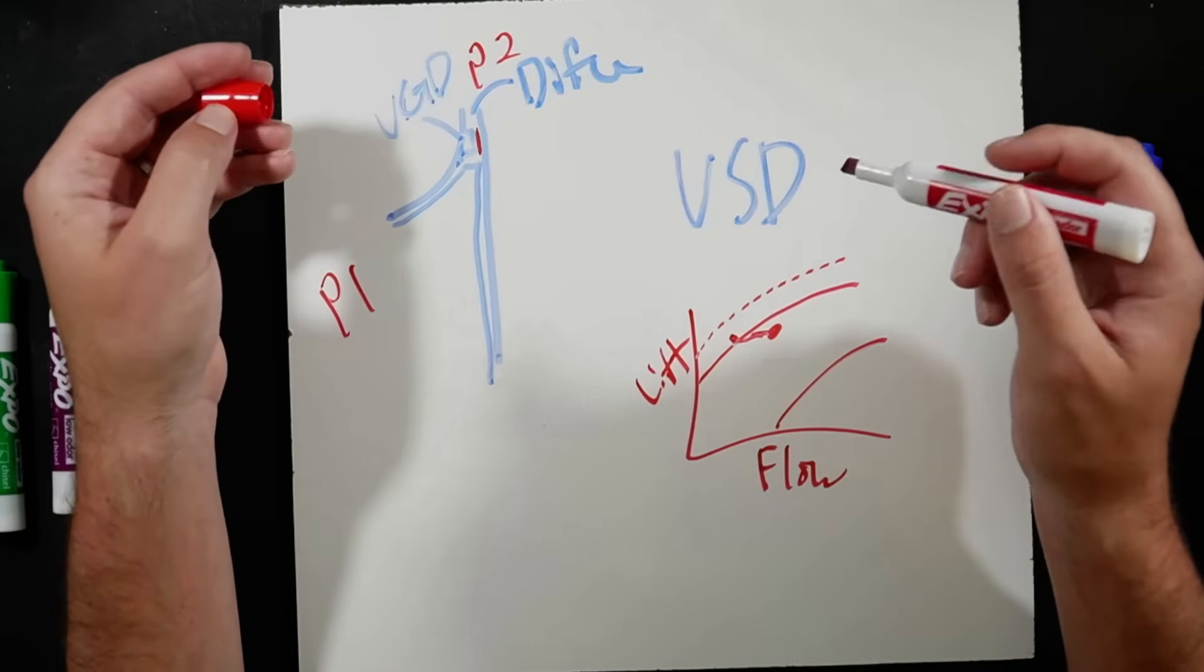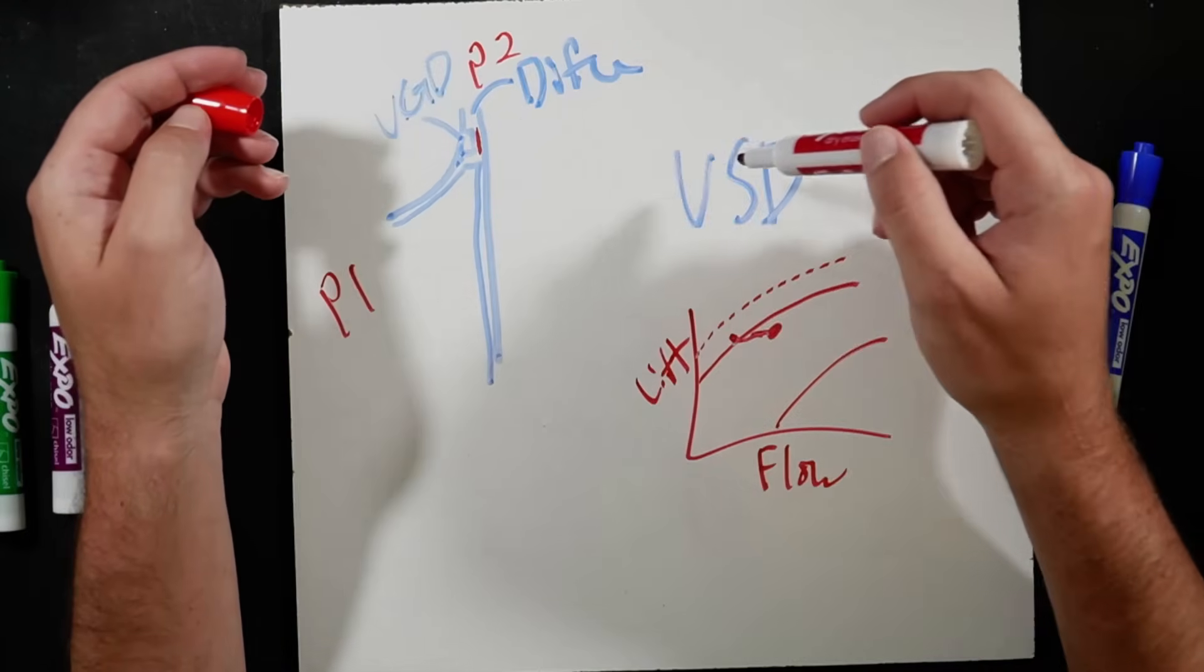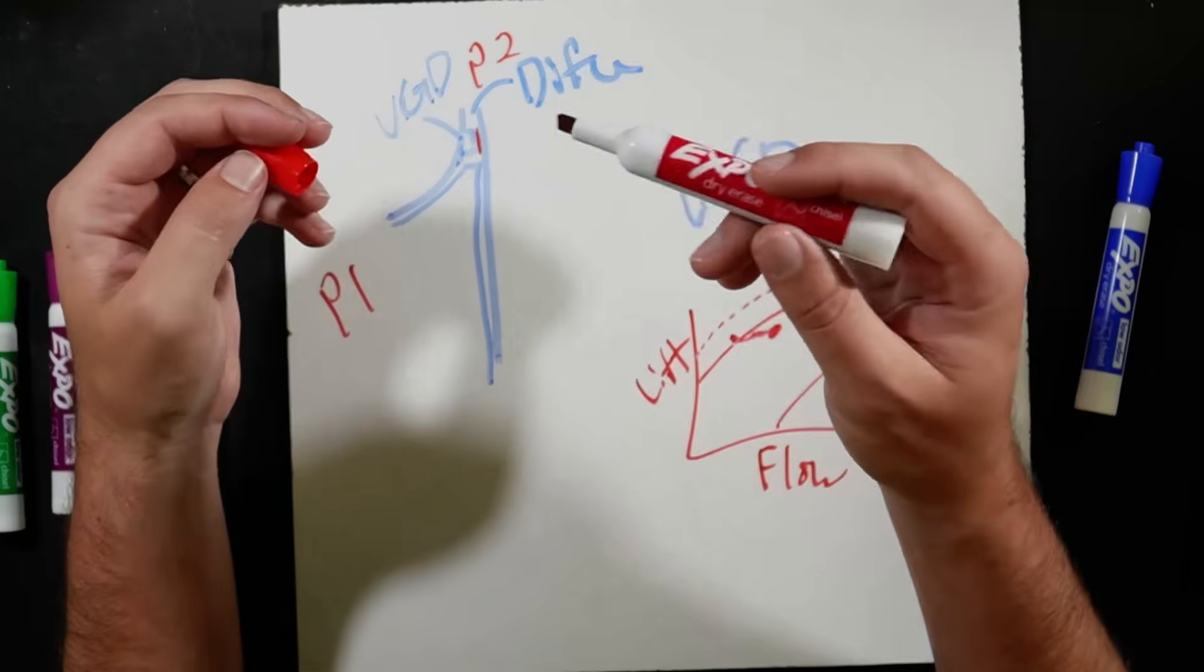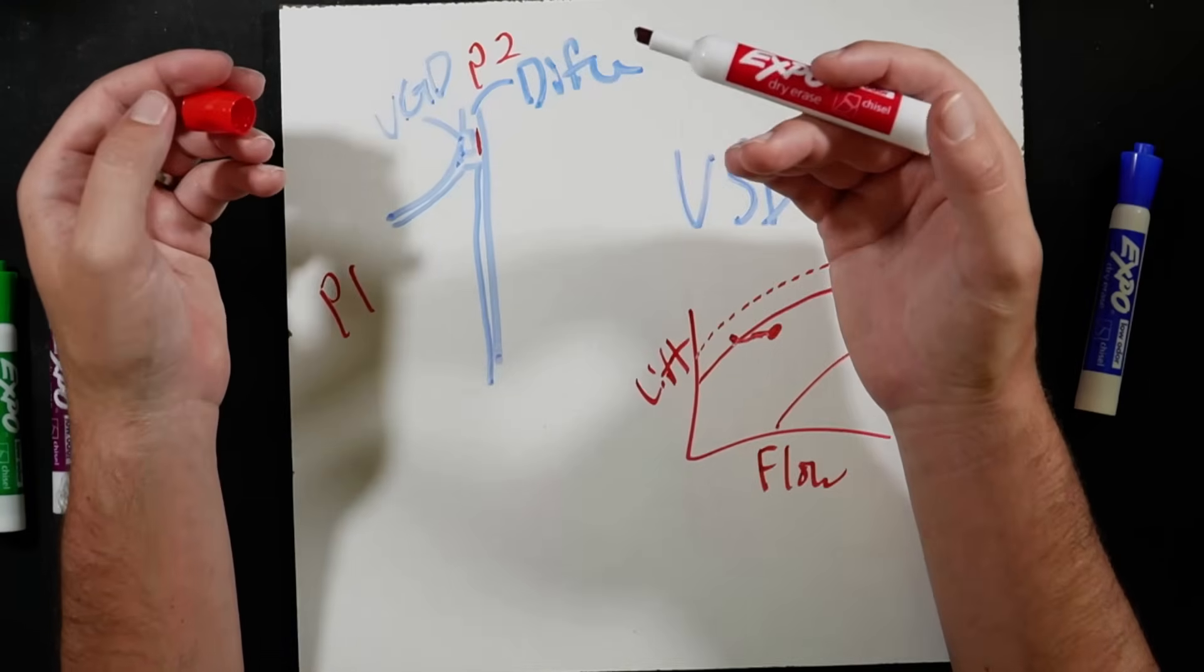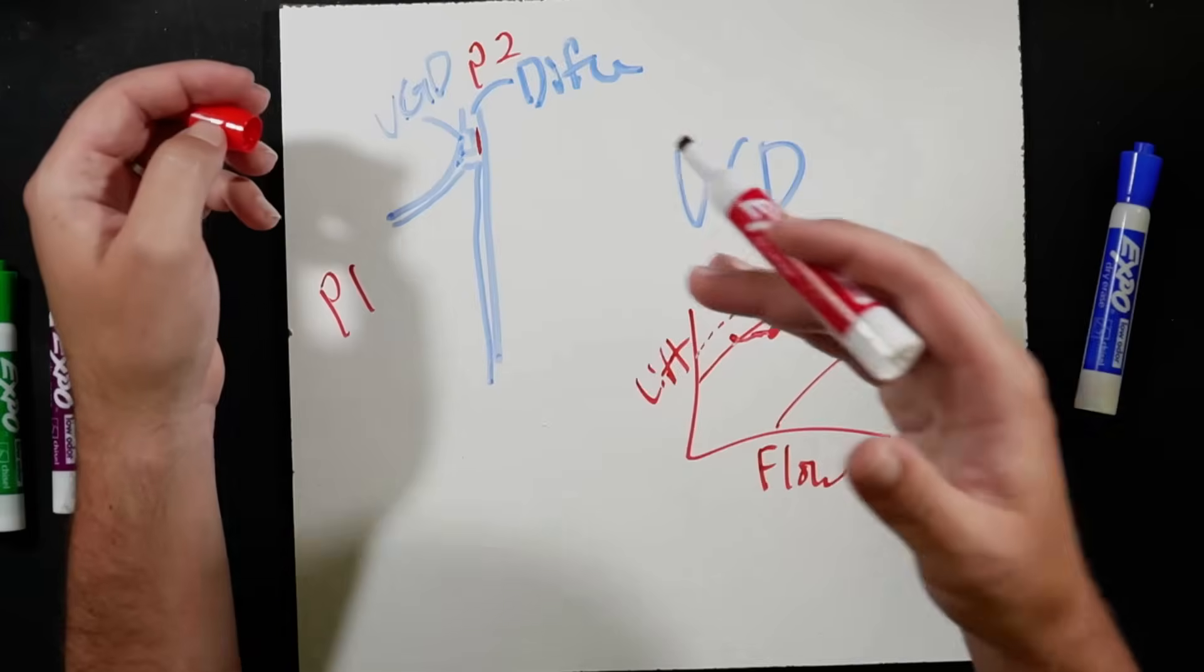And your YMC squareds are also this way. So those are magnetic bearing machines. But those are two examples of where we don't have variable guide vanes coming into the compressor, we just have a VGD and a VSD in order to modulate flow.